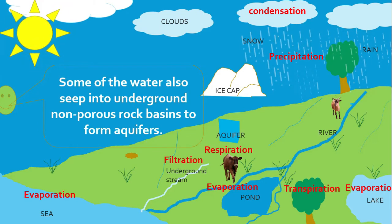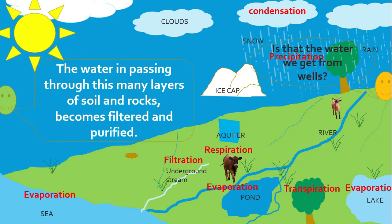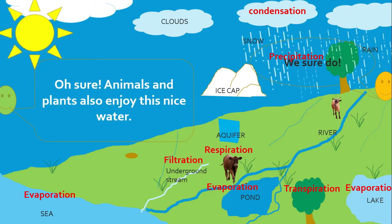Some of the water also seeps into underground non-porous rock basins to form aquifers, which are, of course, underground wells. The water, in passing through these many layers of soil and rocks, becomes filtered and purified. Is that the water we get from the well? Oh, sure! Animals and plants also enjoy this nice water.